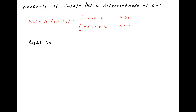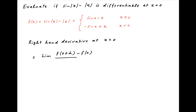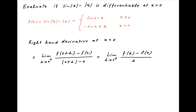Therefore, the right-hand derivative of f(x) at x equal to 0 is equal to the limit of f(0 + h) minus f(0) divided by h as h tends to 0 from the positive side. This is equal to the limit as h tends to 0 from the positive side of f(h) minus f(0) divided by h. Now, f(0) is equal to sin(0) minus 0, which is equal to 0.